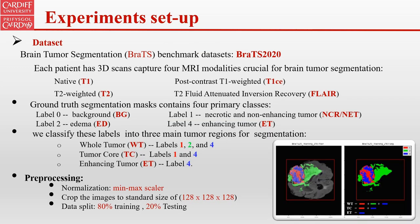The proposed model is trained and validated using the BRATS 2020 dataset. Each scan captures four MRI modalities. The ground-truth segmentation mask contains four primary classes: background, necrotic, edema, and enhancing tumor. Following common practice in the literature, we classify these into three main tumor regions: whole tumor, tumor core, and enhancing tumor. For pre-processing, we used min-max scalar normalization, cropped images to a fixed size of 128×128×128, and applied a standard 80-20 data split.